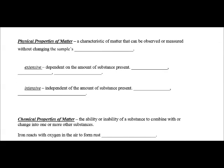The physical properties of matter are characteristics of matter that can be observed or measured without changing the composition. We have extensive physical properties, which depends on the amount of substance present. Mass is an extensive property. You can have 20 grams, 50 grams, a billion grams of something. Length is an extensive property. Volume.